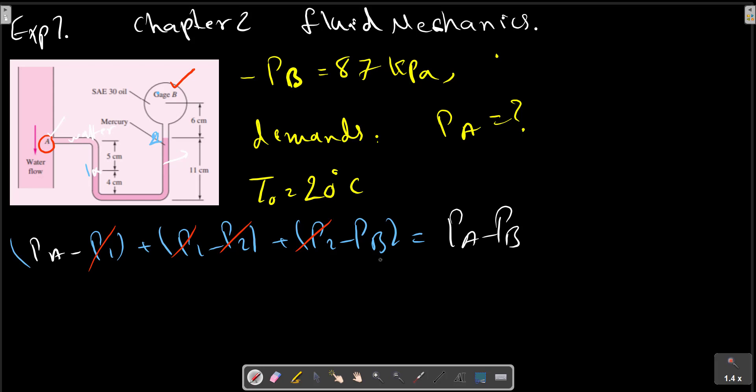So if we have PB and the relation in the right hand side, we can calculate from this point: minus gamma of water, minus gamma of mercury multiply by Z1 minus Z2, minus gamma of oil, Z2 minus ZB.